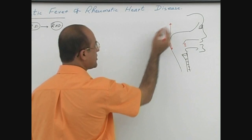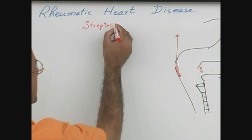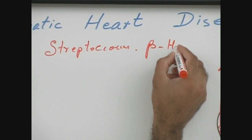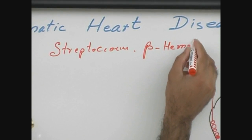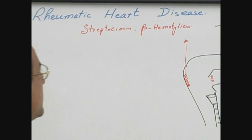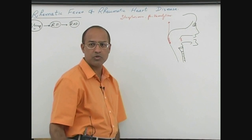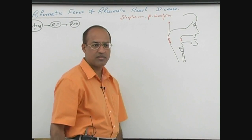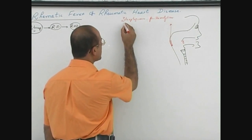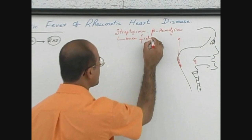This bacterium is streptococcus beta hemolyticus. It is beta hemolytic because these streptococci produce strong hemolysins which produce hemolysis on blood agar. These streptococci are beta hemolytic and belong to Lancefield group A.